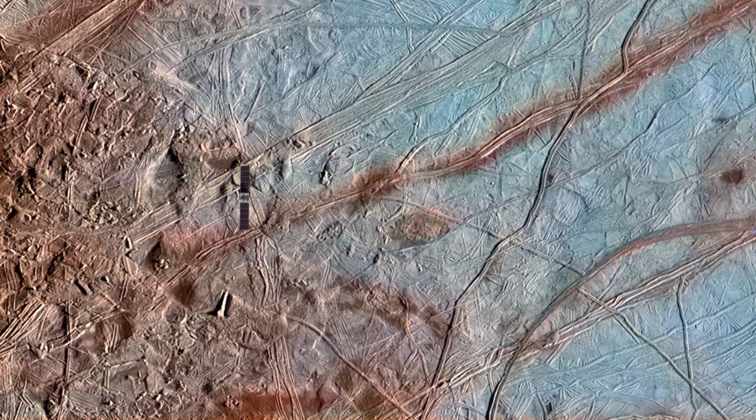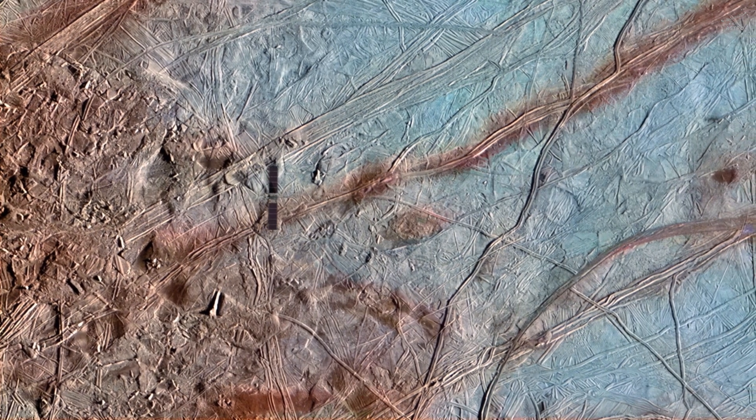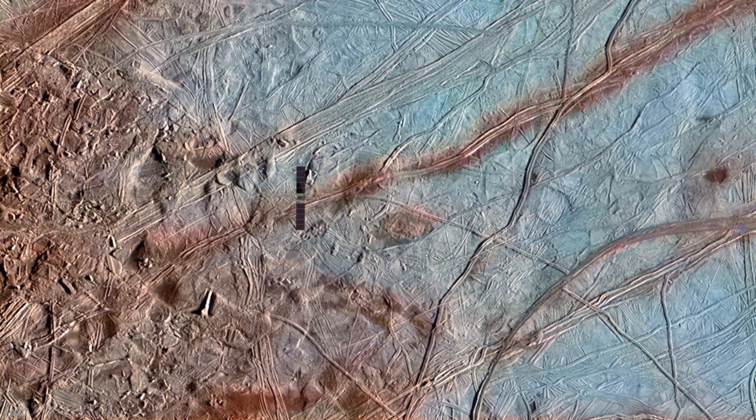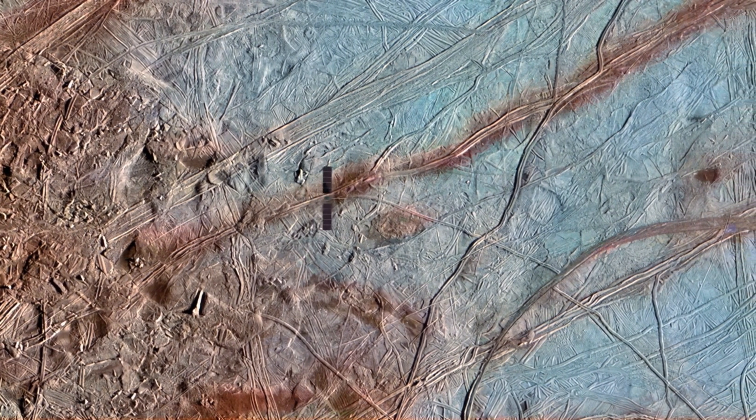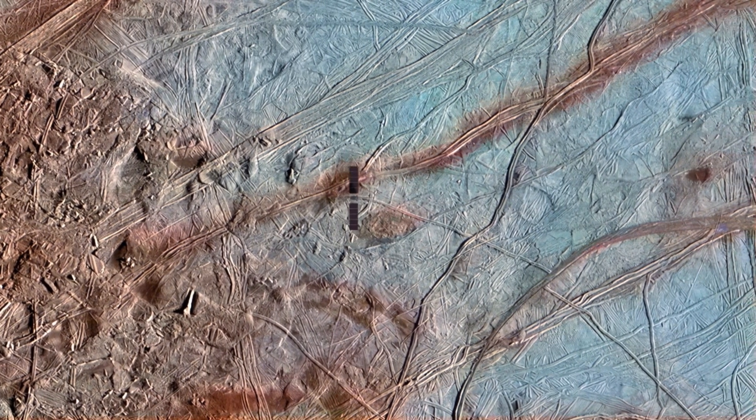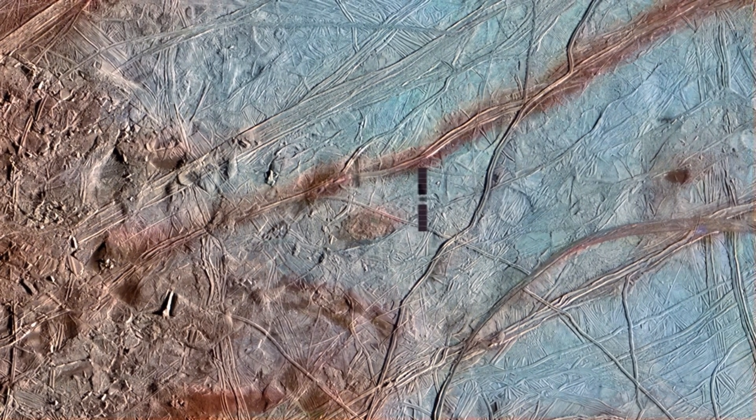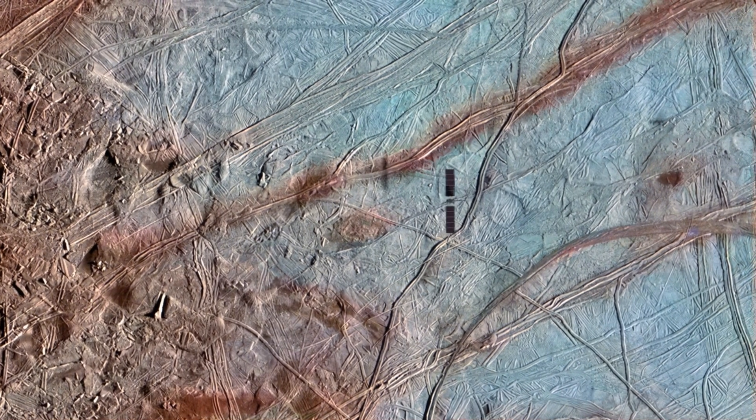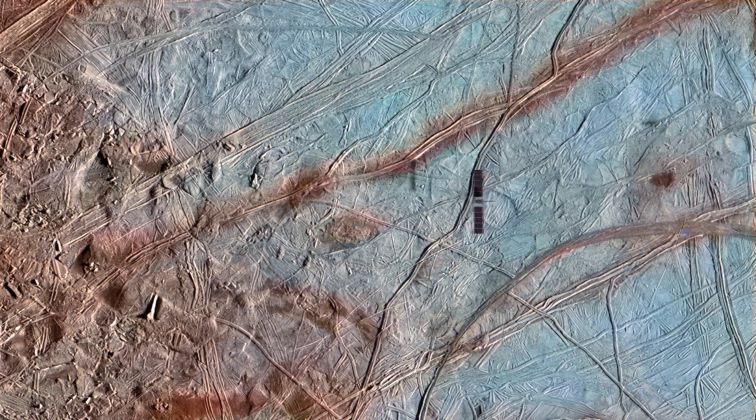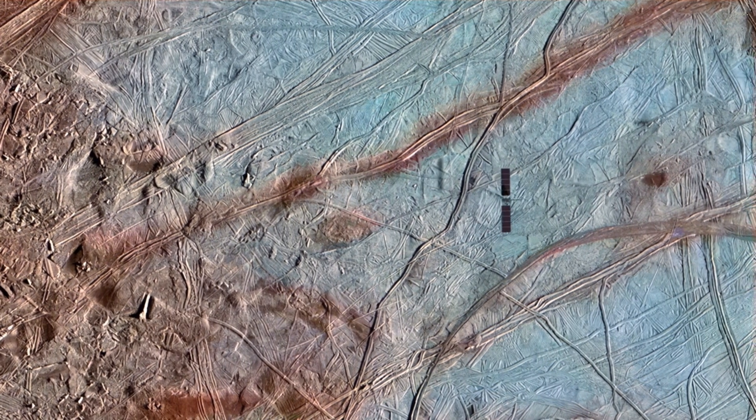Let's imagine Europa, one of Jupiter's moons. Beneath its icy crust, scientists believe there's a vast, salty ocean tens of kilometers deep. No sunlight. No breathable air. But down near the ocean floor, there may be heat and minerals and everything life might need.